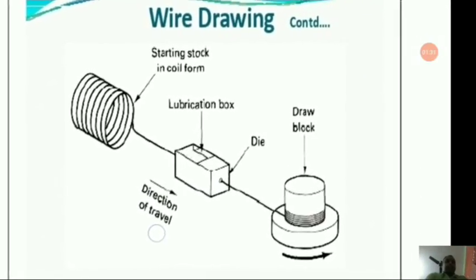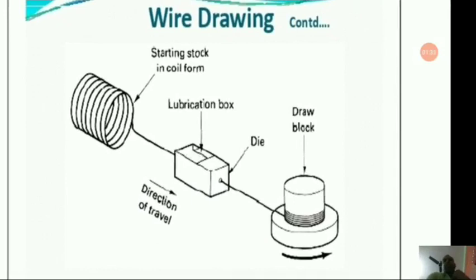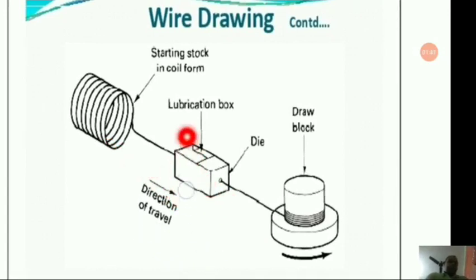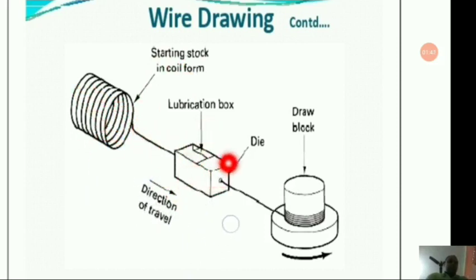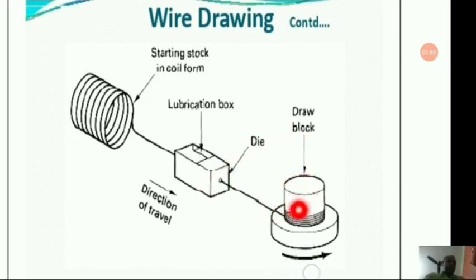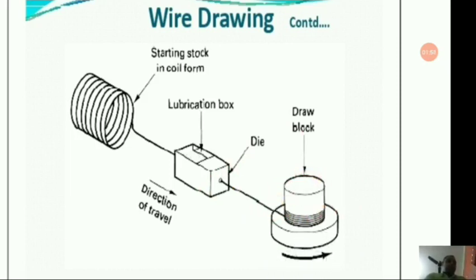Here is a picture that clearly depicts the process of wire drawing: the wire travels from the starting coil, unwinds, passes through a lubrication box, then through the die, and gets coiled onto the draw block.